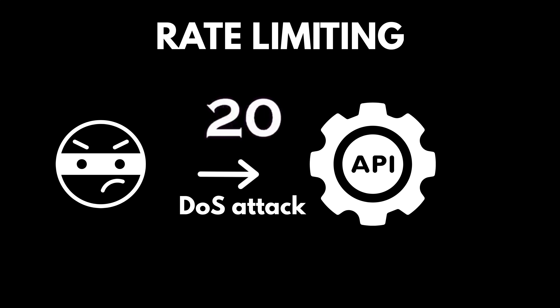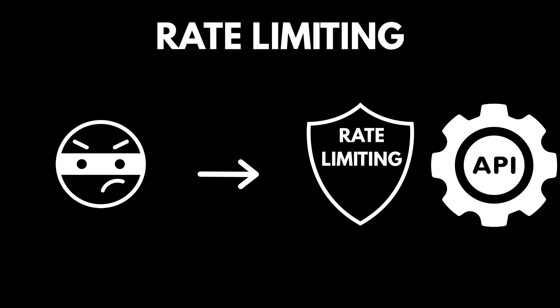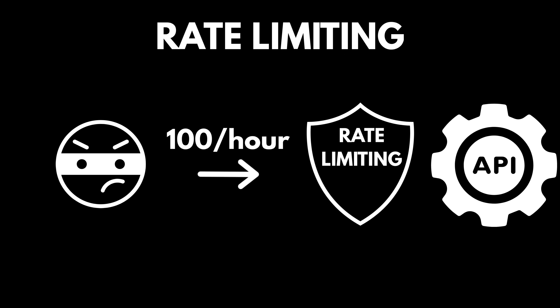First up, imagine a single user or a bot slamming your API with thousands of requests per second. This is a denial of service, or DOS attack, and it will crash your server. The defense is rate limiting. Think of it as the bouncer for your API. It controls how many requests a client can make in a specific time window — you might say 100 requests per hour per IP address. A legitimate user might hit this limit if they're building something too aggressive, but an attacker will slam into it immediately and be locked out. It's your first line of defense against abuse and resource exhaustion.